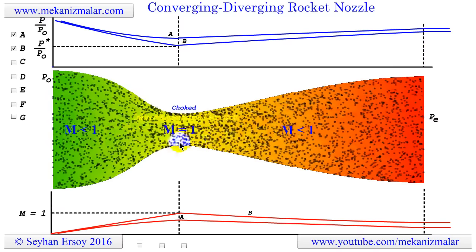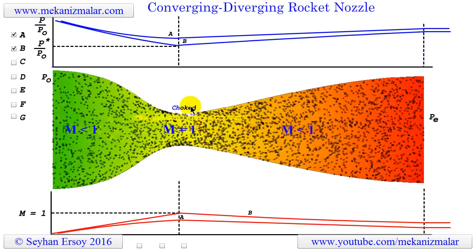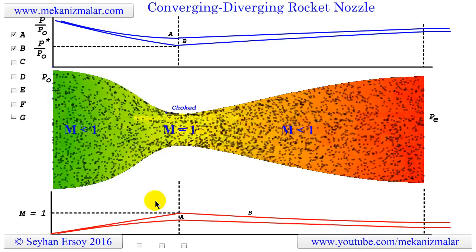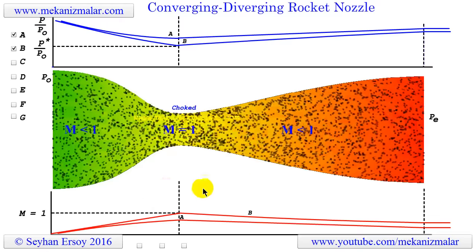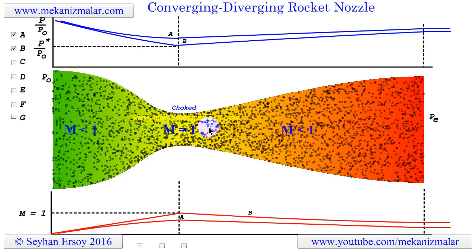When the exit pressure is reached to this condition, we refer to the nozzle flow as choked. This is because it doesn't matter how much further we reduce the exit pressure. The mass flow passing through the throat of the nozzle will not change.